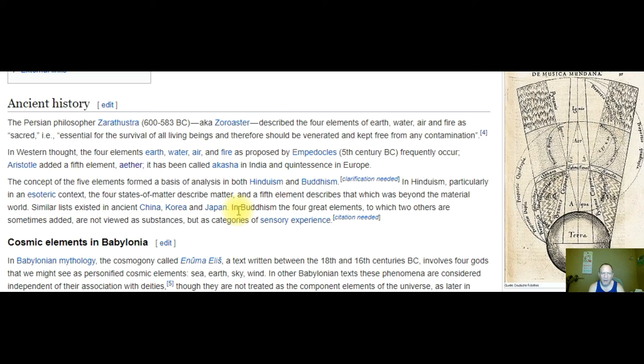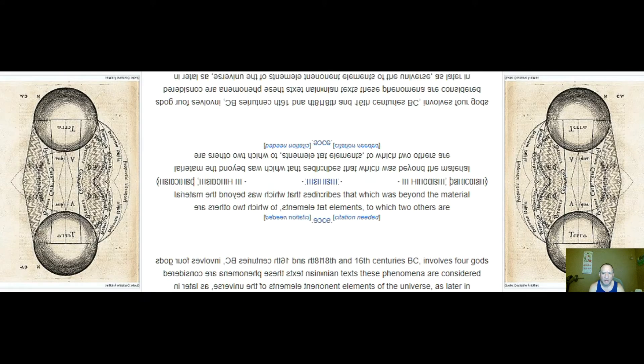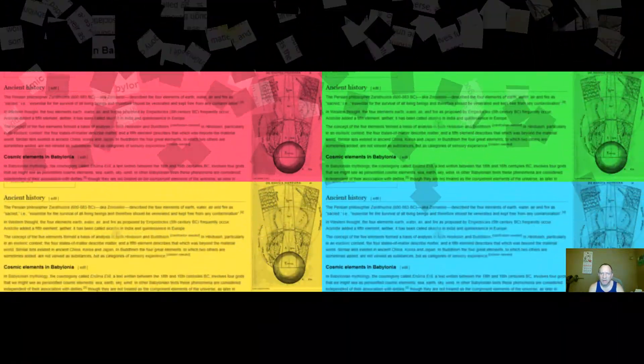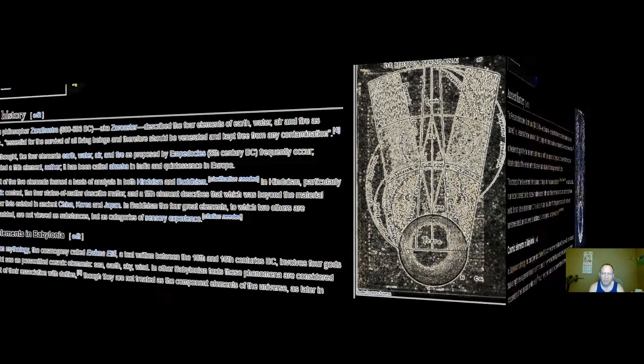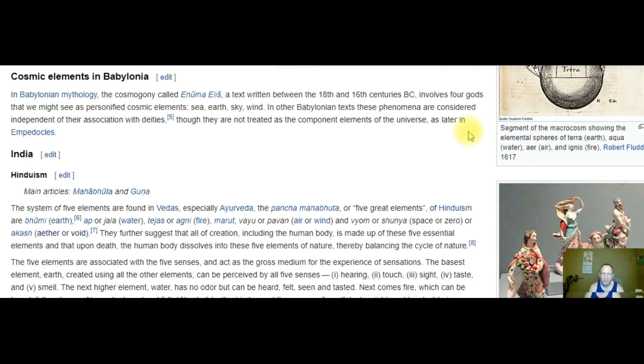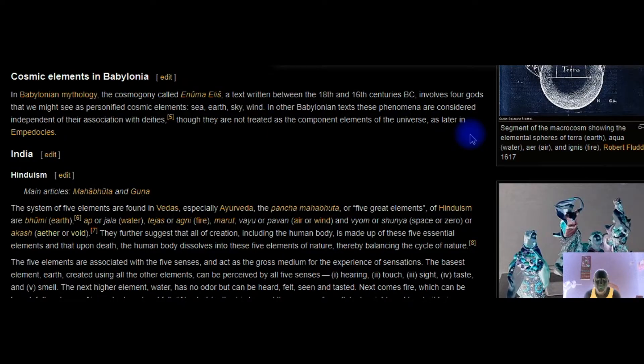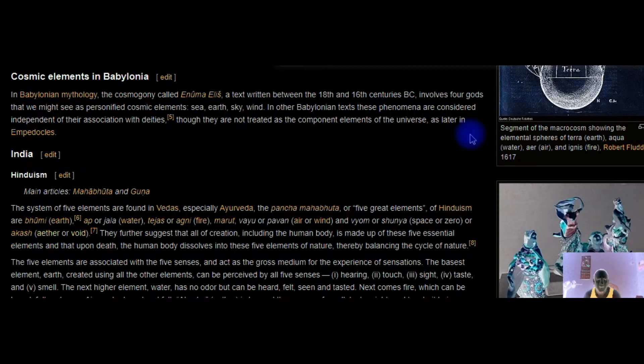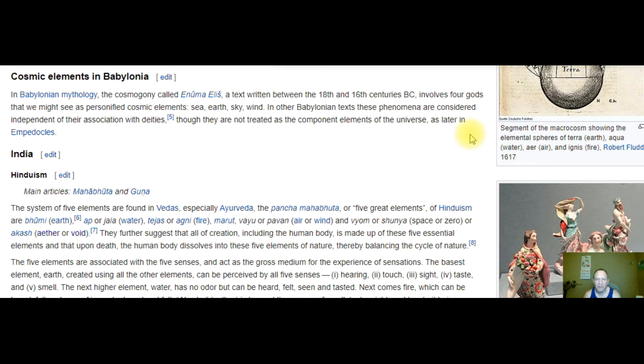Aristotle added the fifth element of the ether. It's also been called akasha in India. In Babylonian mythology, the use of four gods that were personified as the cosmic elements: water, earth, sky, and wind. In other Babylonian texts, these phenomenon are considered independent of their association with deities.